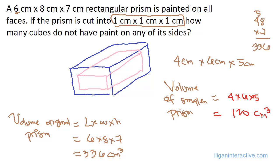This is basically the number of cubes that do not have paint on their sides, because this smaller prism can be broken down into 120 cubes of dimension 1 cm by 1 cm by 1 cm. So the answer is 120.